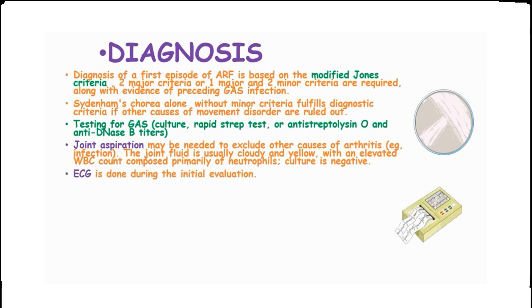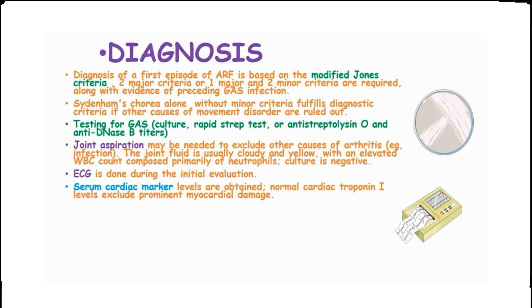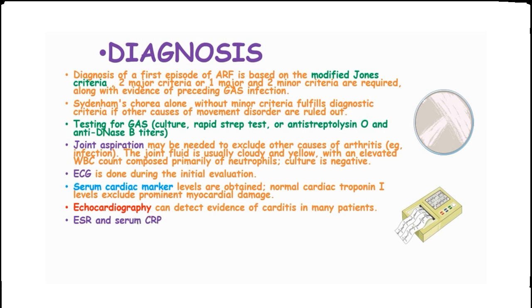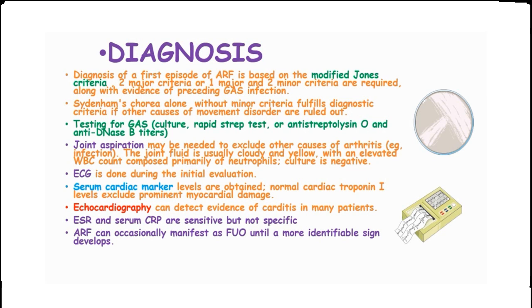Electrocardiogram is done during the initial evaluation and serum cardiac marker levels obtained. Normal cardiac troponin-I levels exclude prominent myocardial damage. Echocardiography can detect evidence of carditis in many patients. Erythrocyte sedimentation rate and serum C-reactive protein are sensitive but not specific. Acute rheumatic fever can occasionally manifest as fever of unknown origin until a more identifiable sign develops.